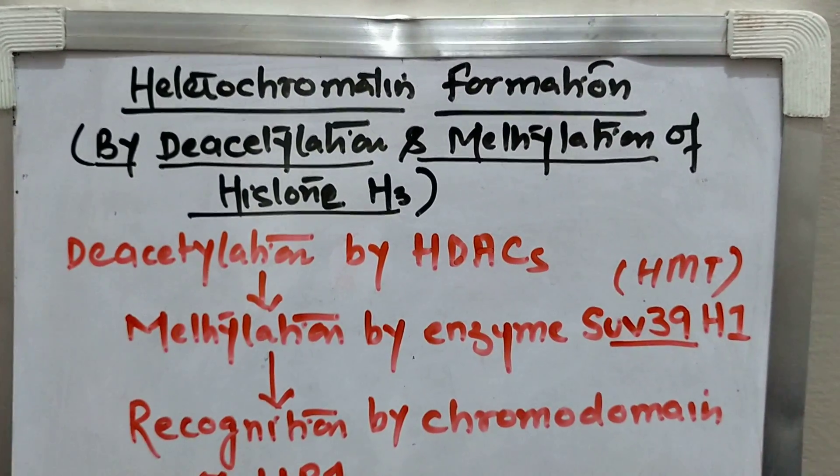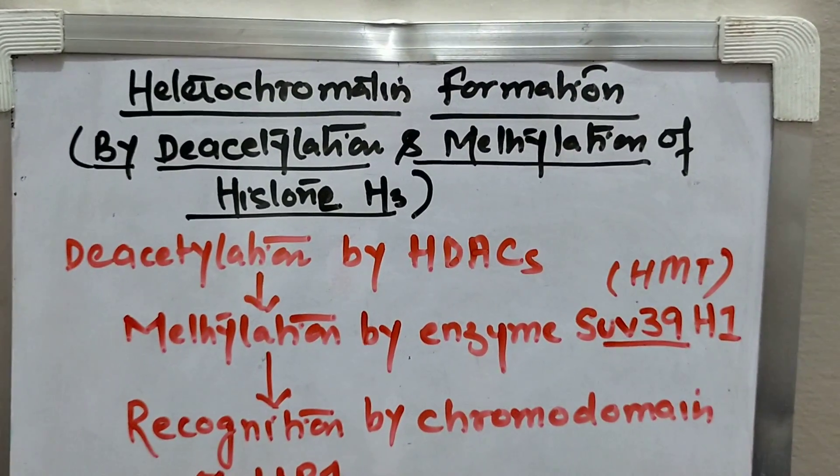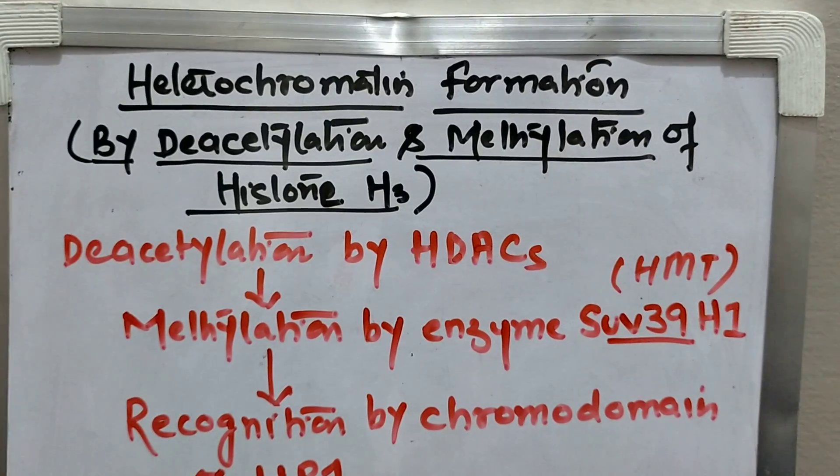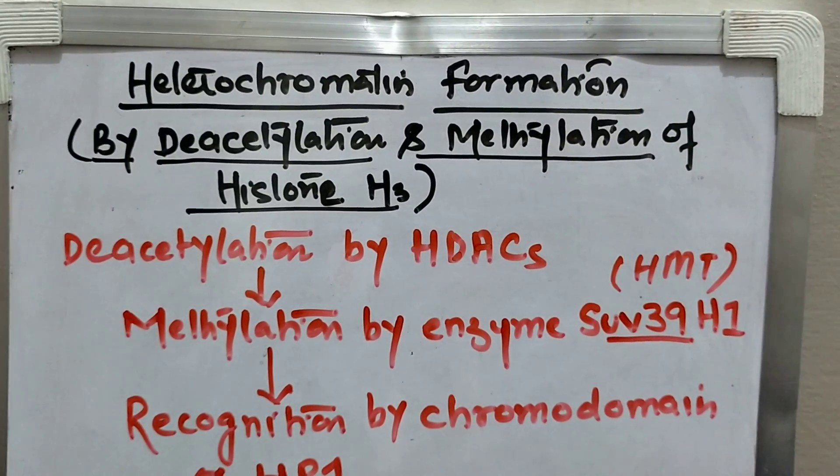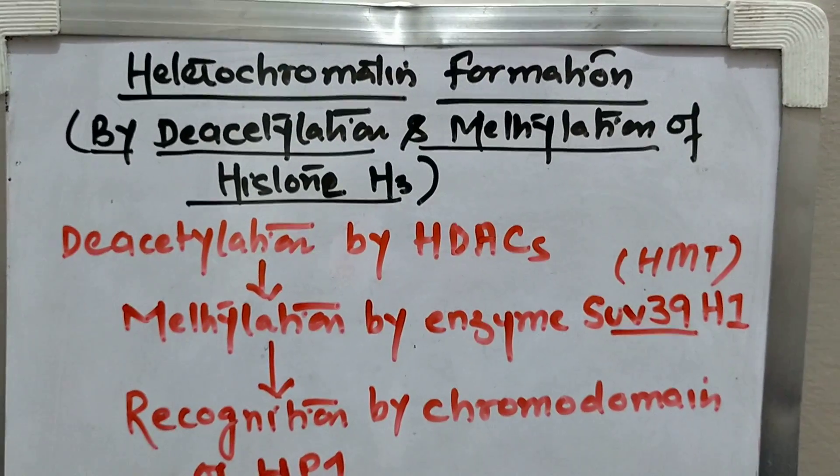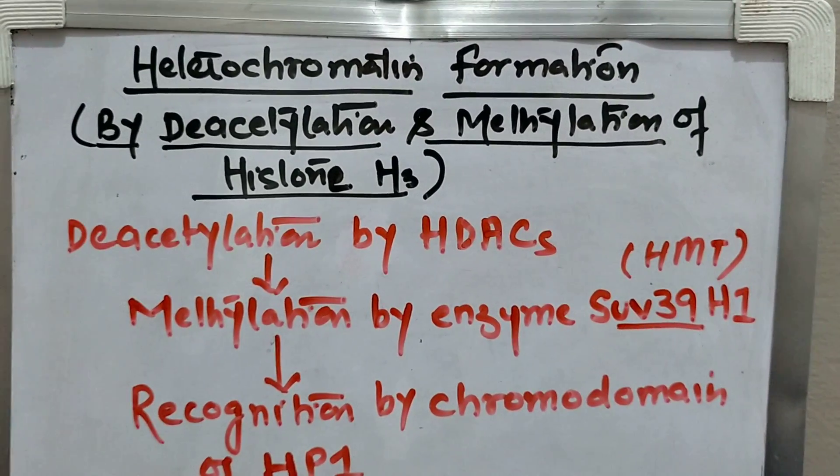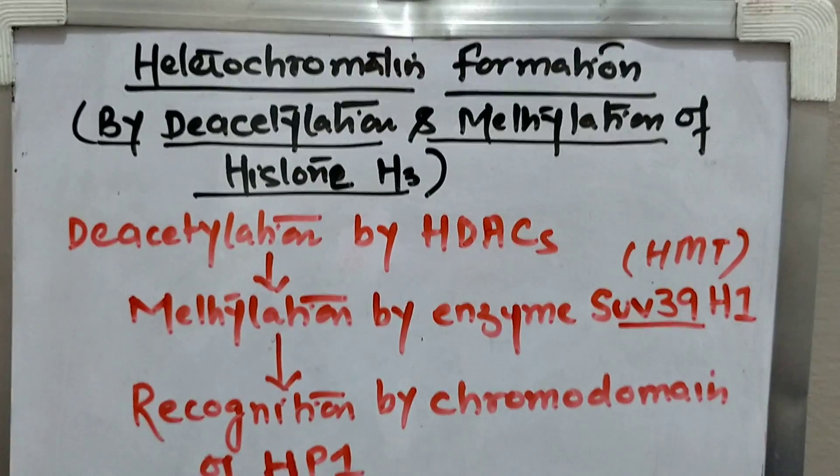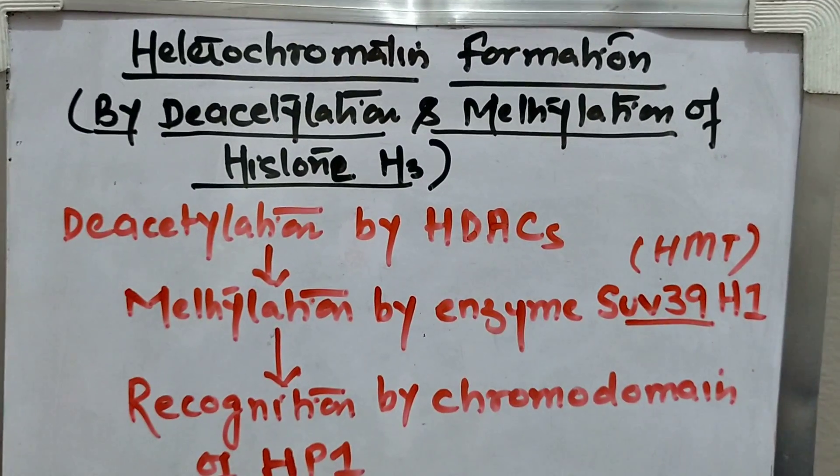Friends, today we are going to study heterochromatin formation. This question was asked recently in November 2020 CSIR exam. What is heterochromatin? It is a very condensed part of the DNA. Why do we have to condense this part? So the gene should not be expressed.